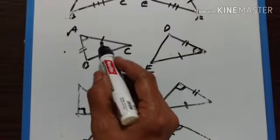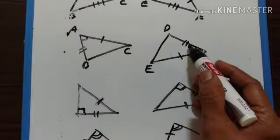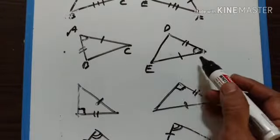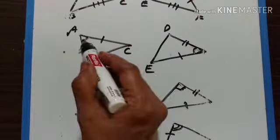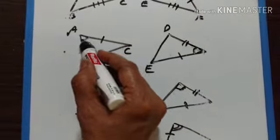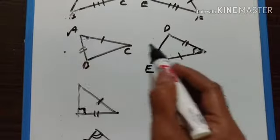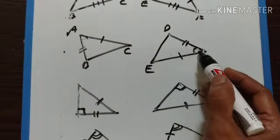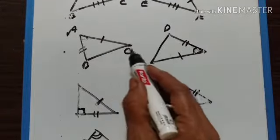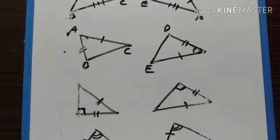Two sides of one triangle are equal to two sides of another triangle, and the included angles are also equal. Therefore, these two triangles are congruent.